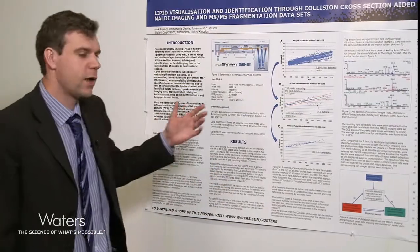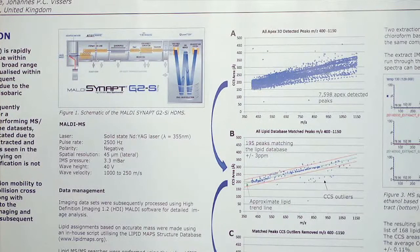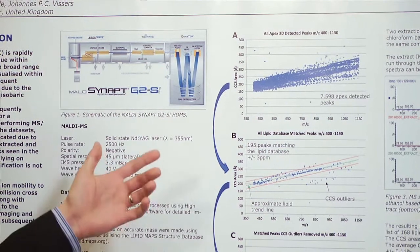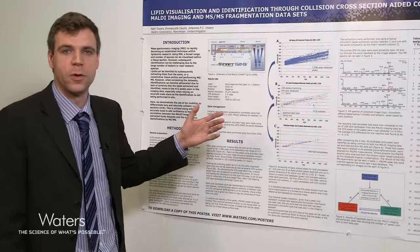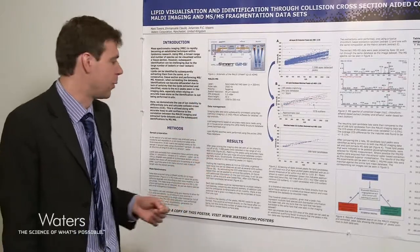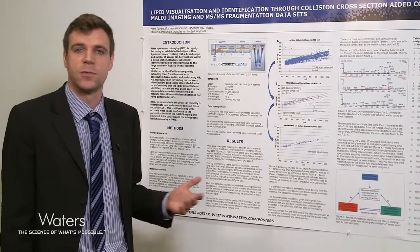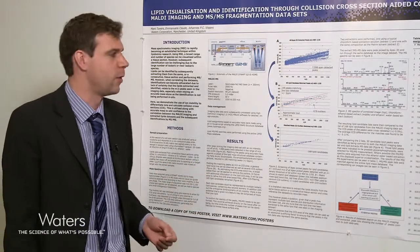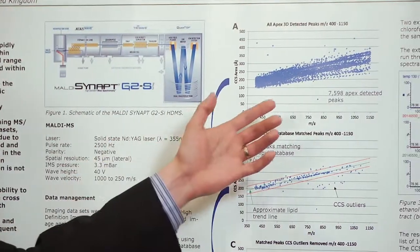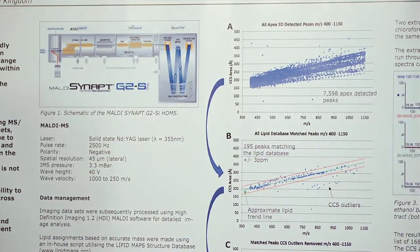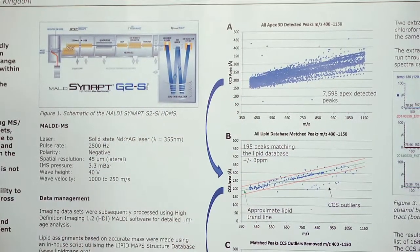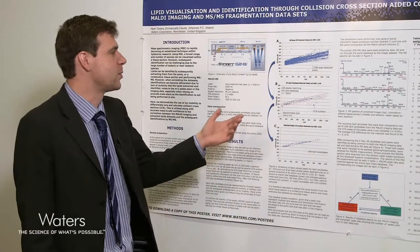Here we've been looking at using collision cross-section areas to allow us to better correlate the two data sets. We acquired an imaging data set performed on a rat brain section. We used 9AA as a matrix and this was performed in negative mode.